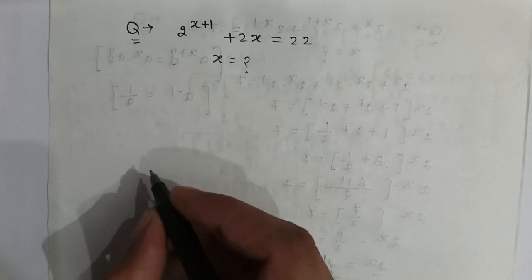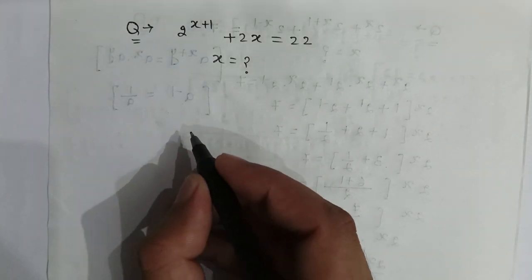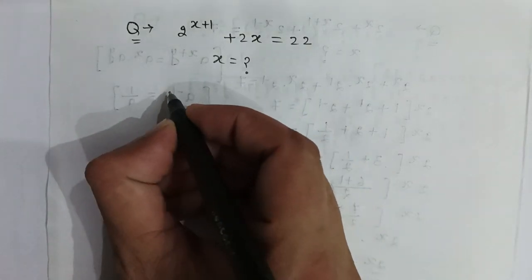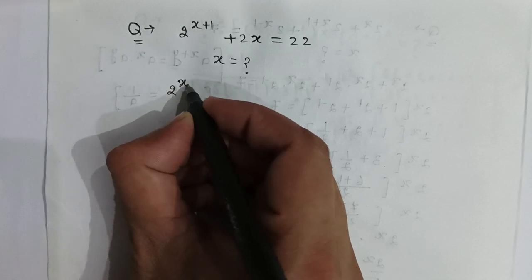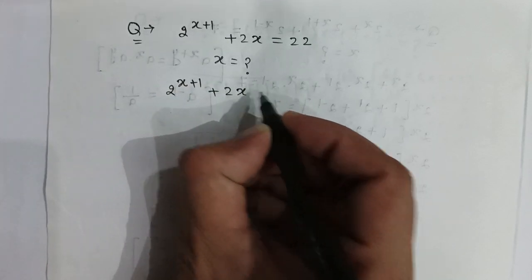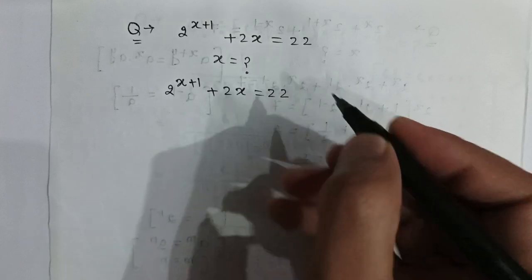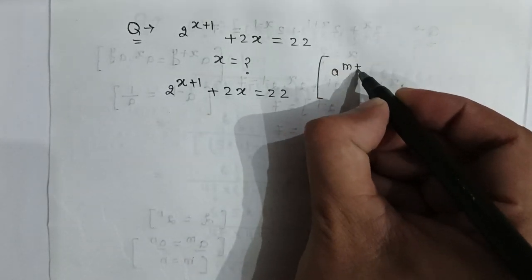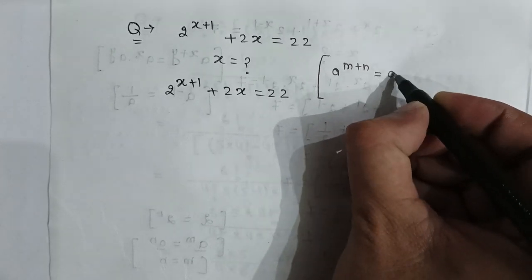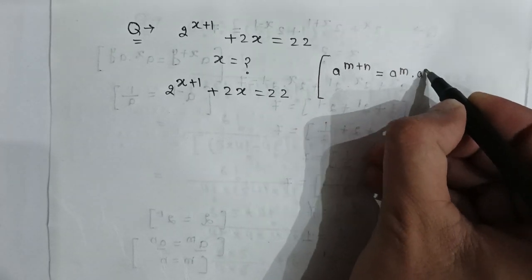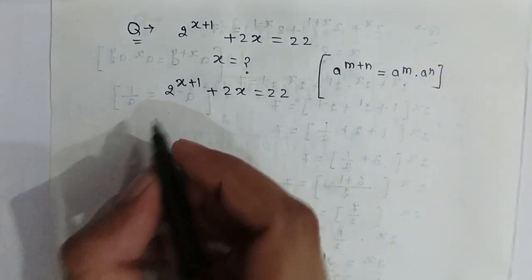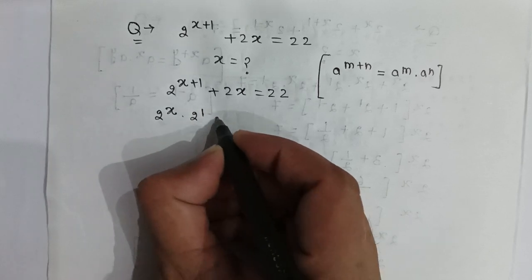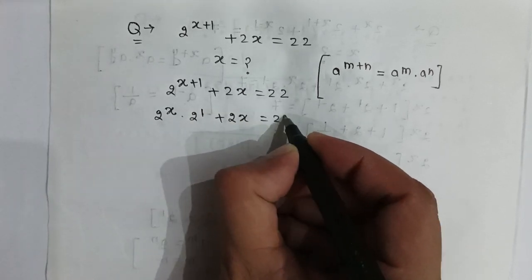Here is a very tricky problem: 2 to the power x plus 1, plus 2x, is equal to 22. Find the value of x. As we know, if a to the power m plus n is written, it can be written as a to the power m multiplied by a to the power n. So it will be 2 to the power x multiplied by 2 to the power 1, plus 2x, is equal to 22.